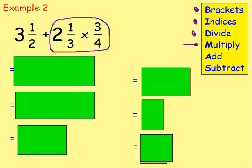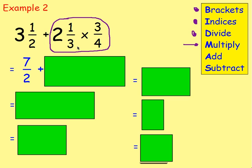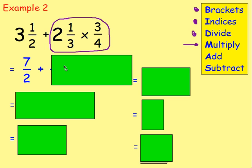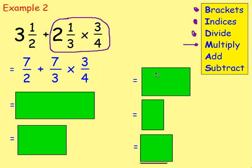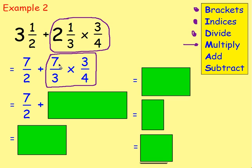Before jumping into BIDMAS and multiplying, we have mixed numbers, so let's change them to improper fractions to make things easier. Three and a half: three times two is six, add one is seven — so seven halves. Two and one third: two times three is six, add one is seven — so seven thirds. Three quarters can stay as three quarters since it's already a proper fraction.